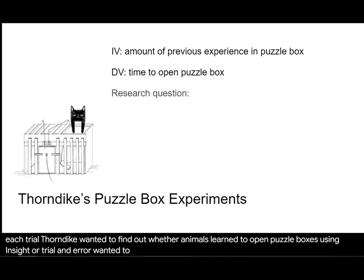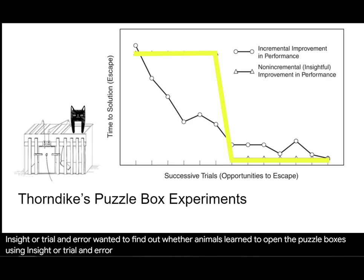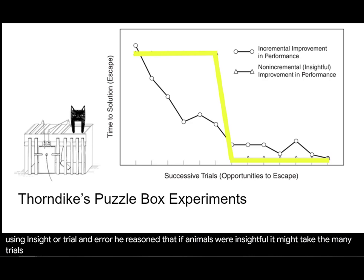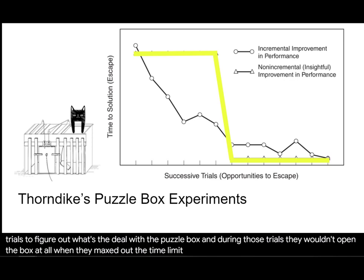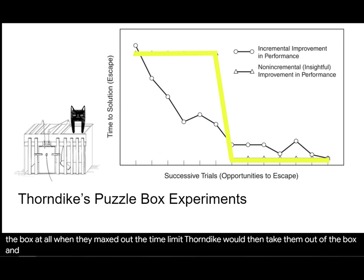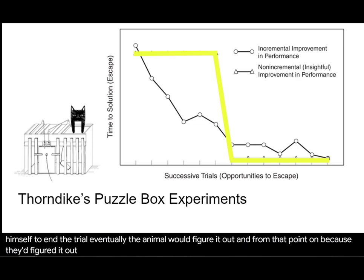Thorndike wanted to find out whether animals learned to open the puzzle boxes using insight or trial and error. He reasoned that if animals were insightful, it might take them many trials to figure out what's the deal with the puzzle box. And during those trials, they wouldn't open the box at all. When they maxed out the time limit, Thorndike would then take them out of the box himself to end the trial. Eventually the animal would figure it out, and from that point on, because they'd figured it out, it would open the box immediately on every trial from then on.